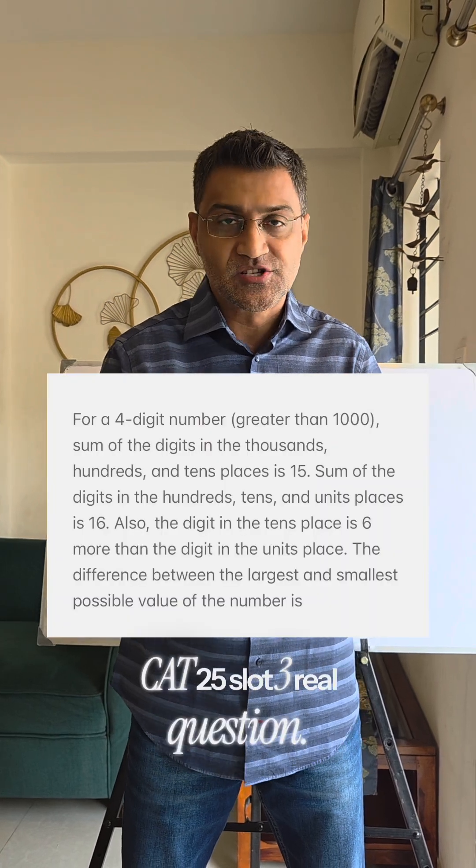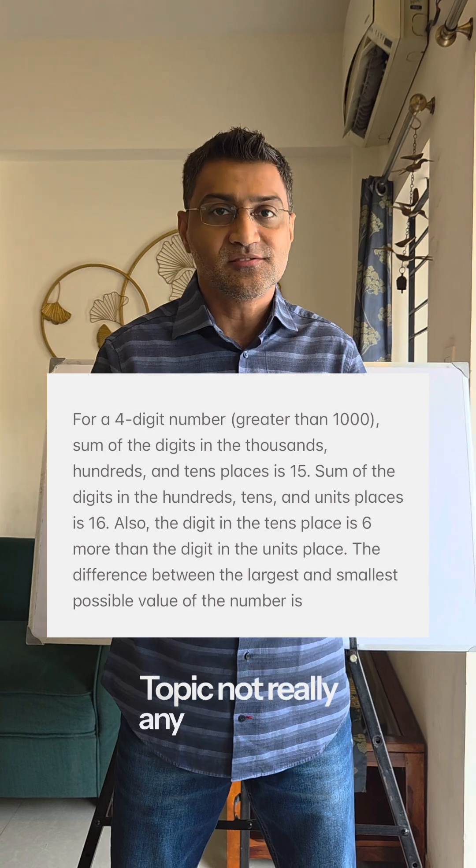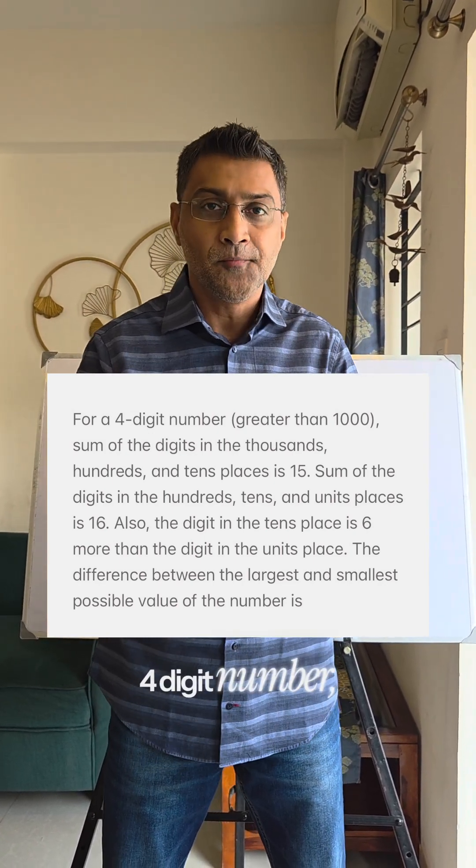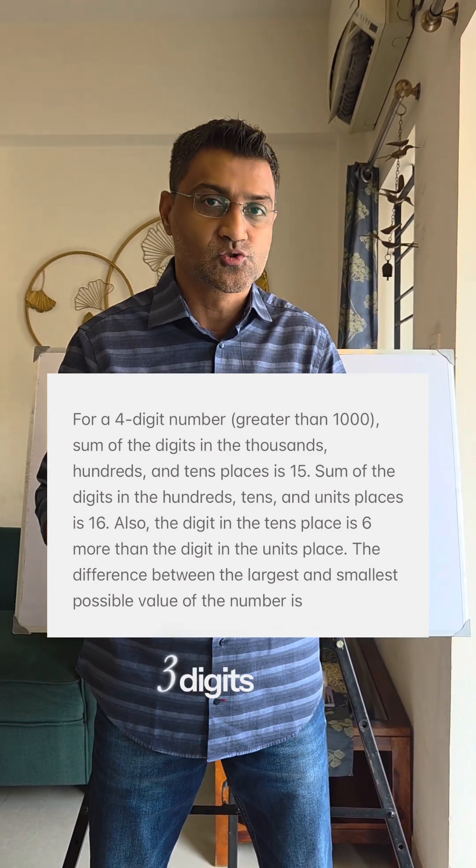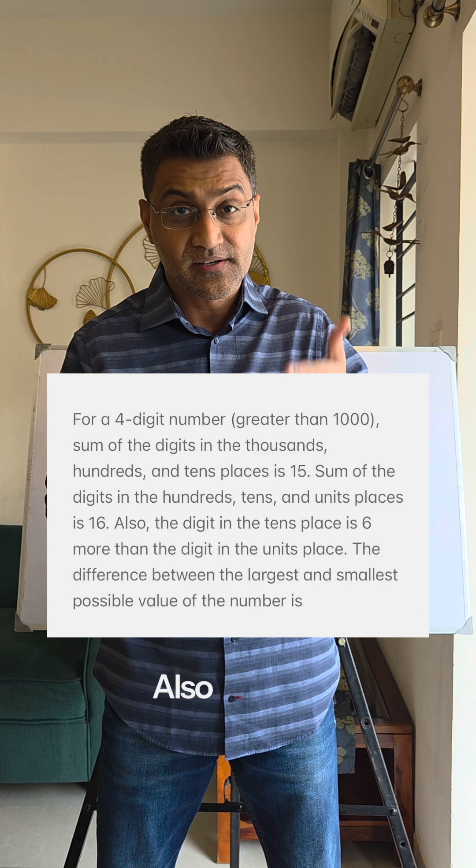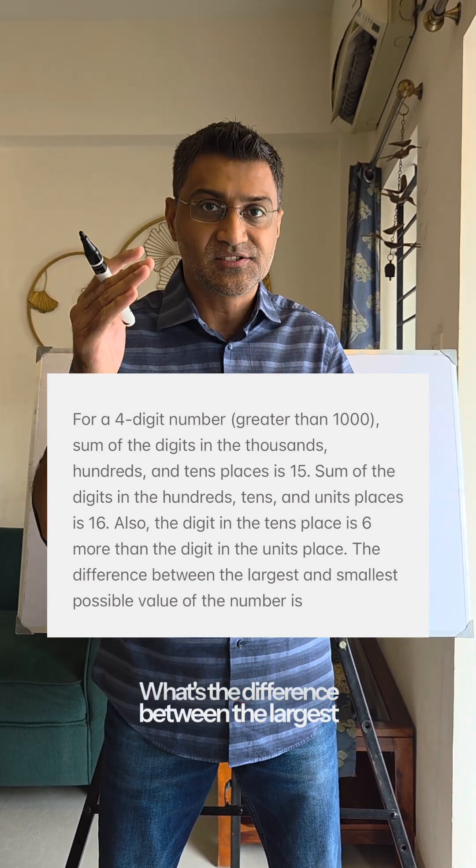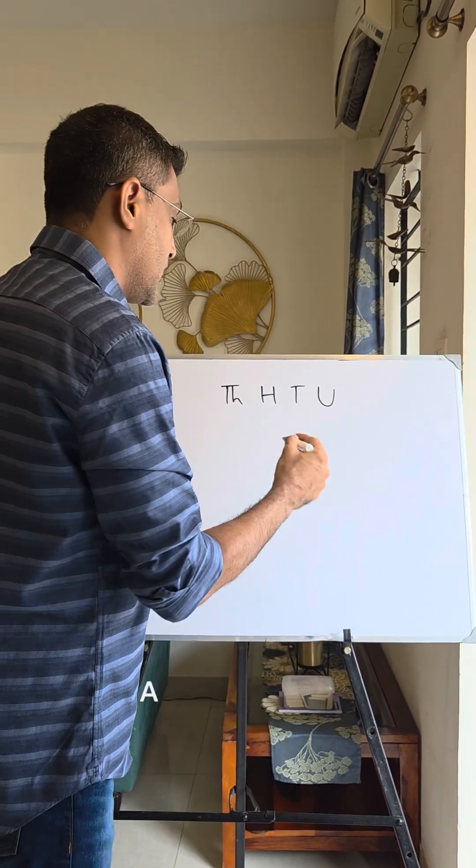This is a CAT 25 Slot 3 real question. Level of difficulty: very doable. Topic: basic aptitude. The question says that in a four-digit number, the first three digits add up to 15 while the last three digits add up to 16. Also, the tens position is 6 more than the units position. What's the difference between the largest and smallest such four-digit number? Let's get into the solution.